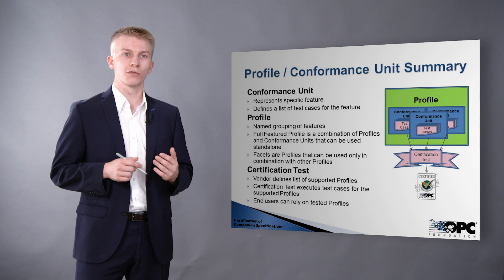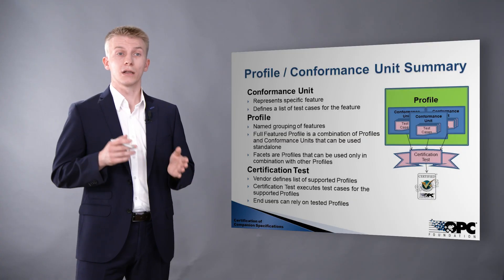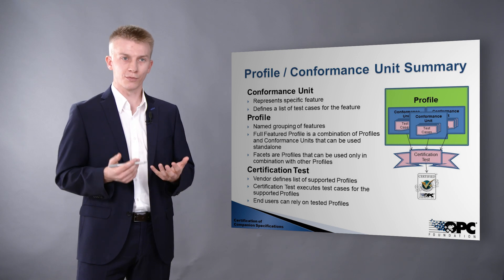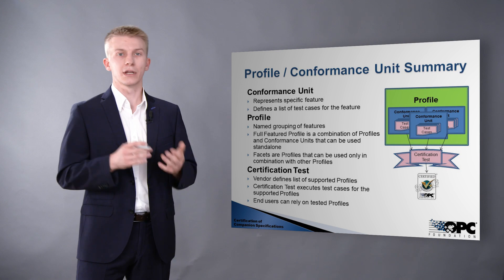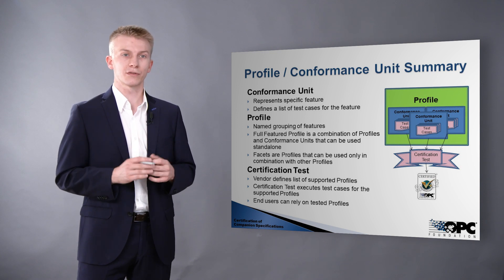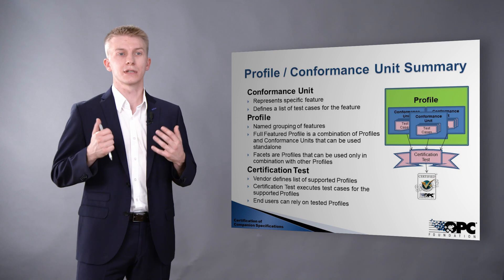To recap: a conformance unit is the smallest testable item, representing a specific feature, and defines a list of test cases mapped to that feature. A profile has a name grouping several features. A full featured profile is a combination of profiles and conformance units to have a standalone server, while a facet can't stand by itself. In certification testing, the vendor defines which profiles the product supports, and certification testing verifies those profiles are correctly implemented by executing the test cases. All profiles that the implementation successfully passes are written on the certificate, so end users can trust the tested profiles.